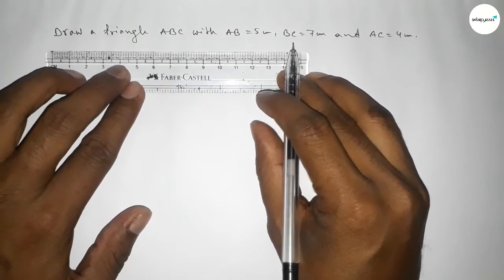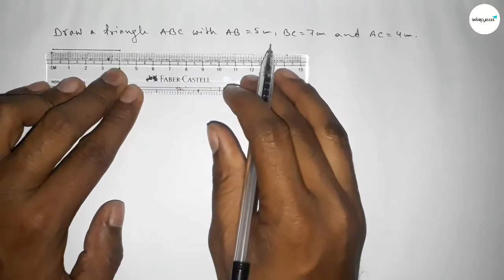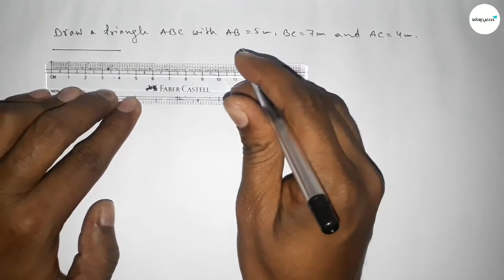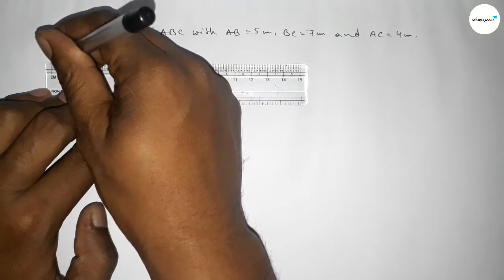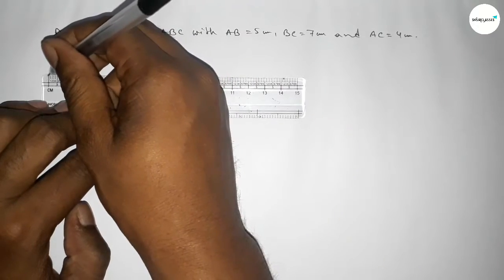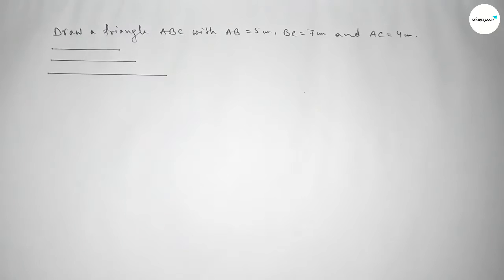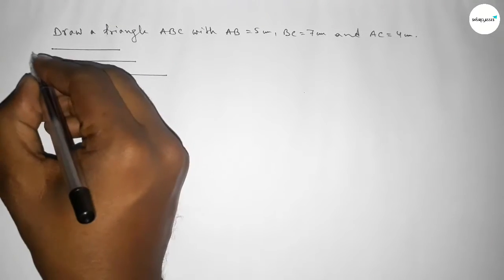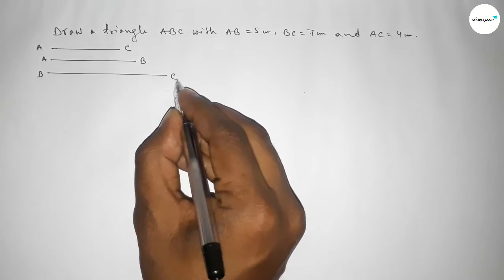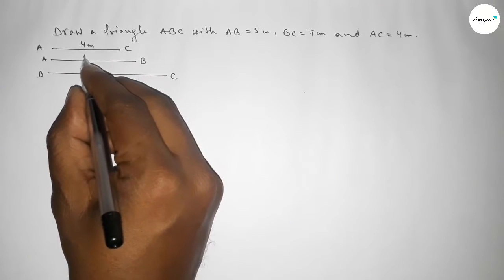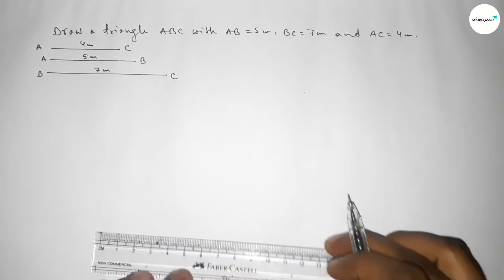First of all, drawing a line of length 4 centimeter — this is the AC line. Drawing another line of length 5 centimeter — this is the AB line. And last, drawing a line of length 7 centimeter — this is the BC line. So AC is 4 centimeter, AB is 5 centimeter, and BC is 7 centimeter.